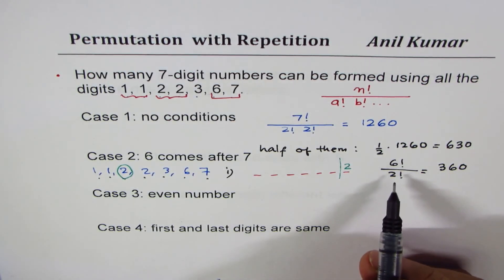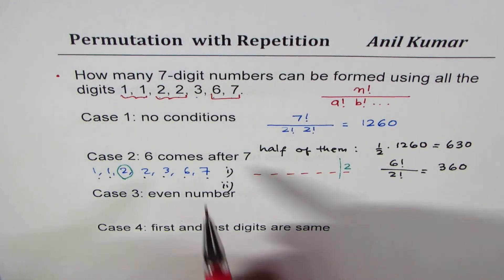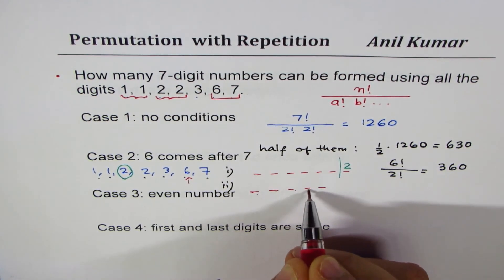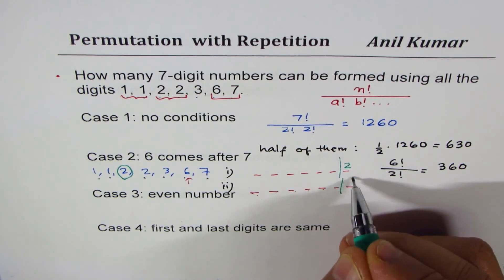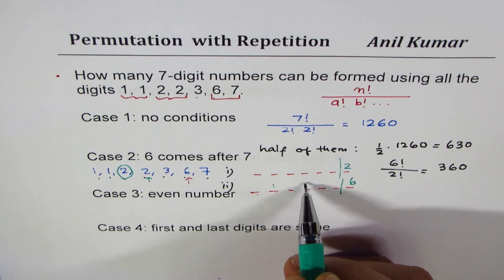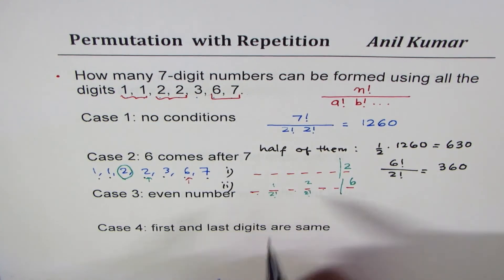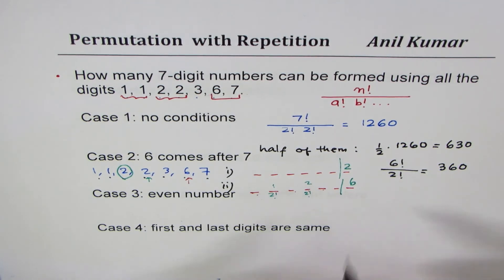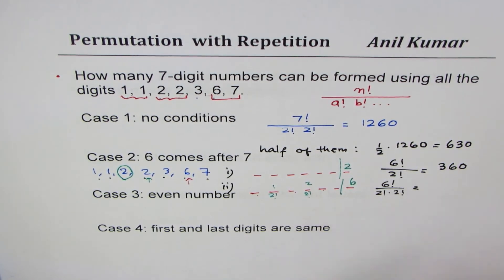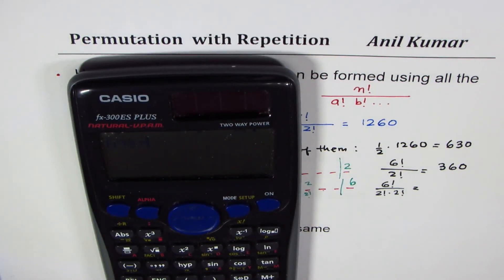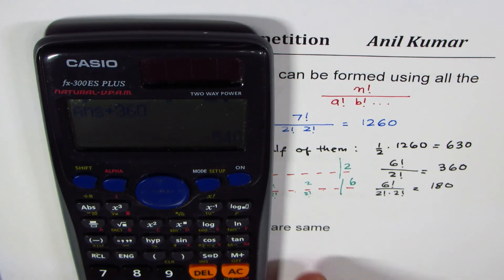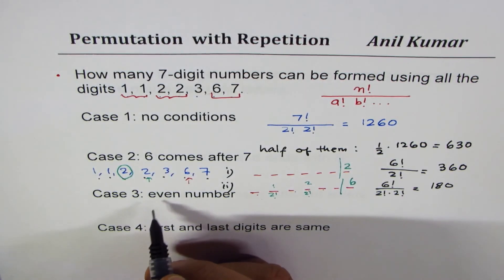Case 3b: ending with 6. We fix 6 at the end, leaving digits 1, 1, 2, 2, 3, 7. We divide 6 factorial by 2 factorial times 2 factorial, giving 180. The total for even numbers is 360 plus 180, which equals 540.